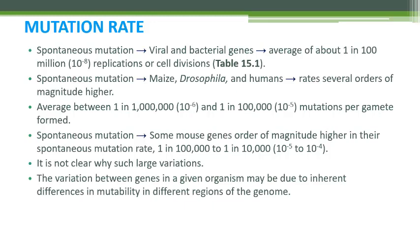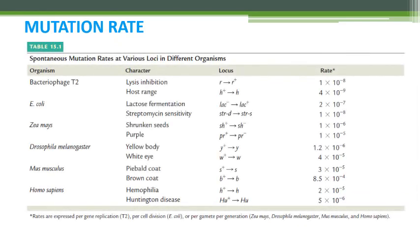One reason that might be given is the mutability of different regions of a genome — that is, the mutability rate of different genes. This means that some genes are resistant to spontaneous mutations while others mutate rather easily or frequently. This might be a cause of the variation. This table shows organisms, their phenotype, gene locus, and mutation rates for different genes.